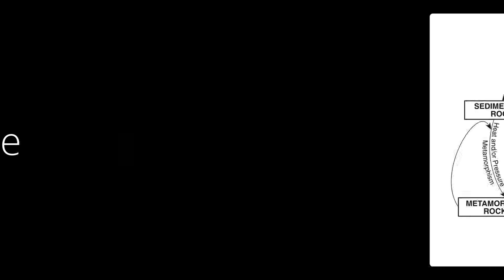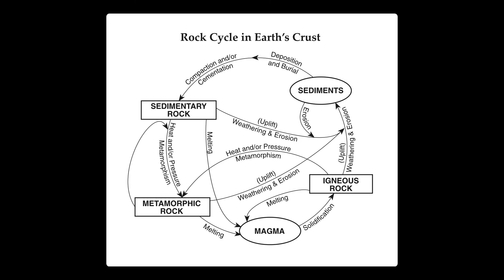Let's take a quick look at the rock cycle. Here's a diagram showing the rock cycle in the Earth's crust. This particular diagram can be found in the New York State Earth Science Reference Tables. What it shows are the different types of rocks and how they can change over time.